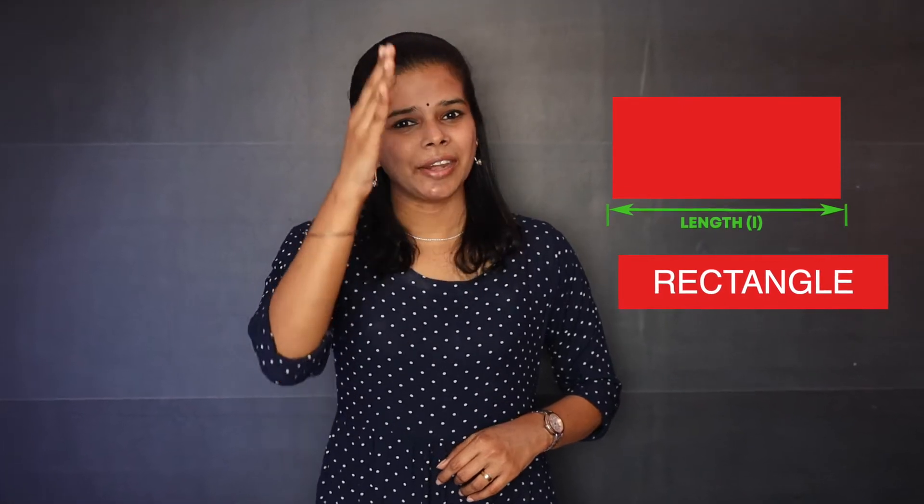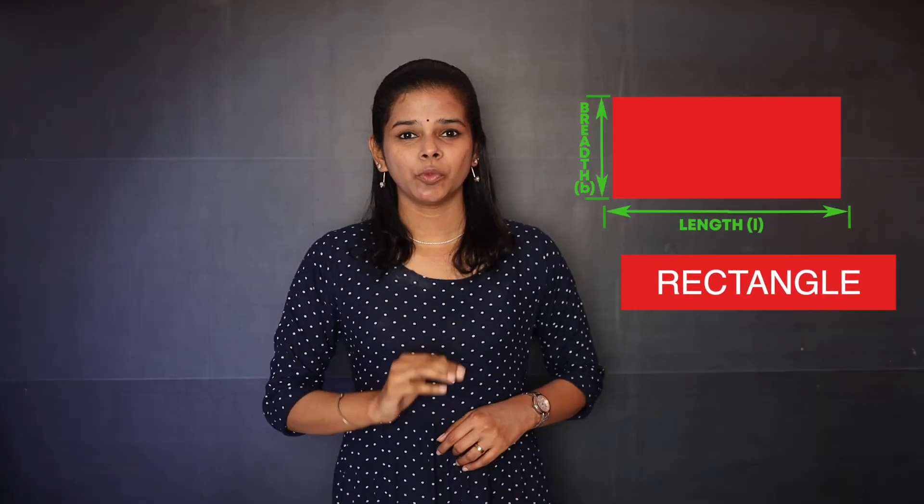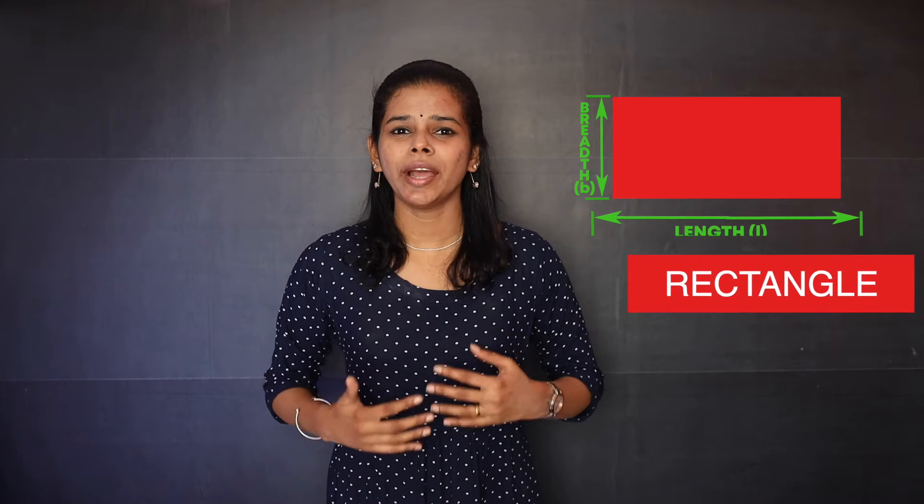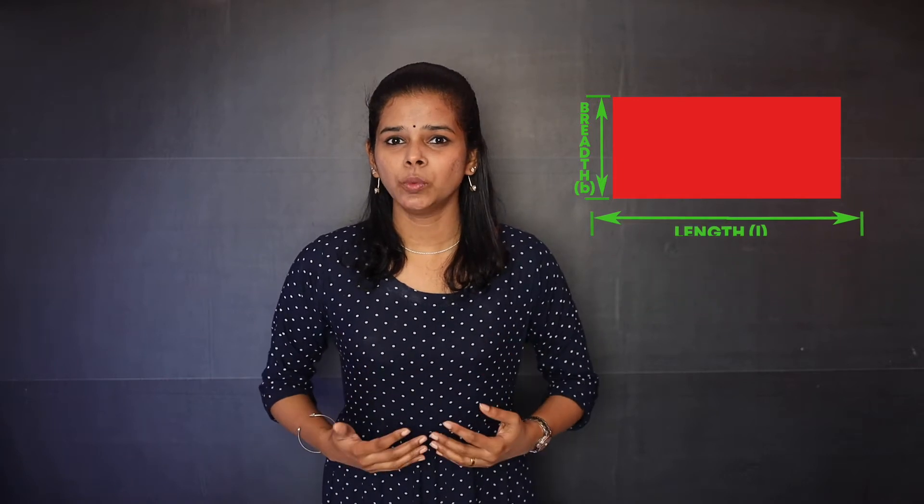Now look at this: it is a rectangle. How many dimensions are there? You can see a length and a breadth, so there are two dimensions. It is called a two-dimensional object or 2D shape. 2D shapes are shapes that we can draw on a flat surface like a paper. Now let us move on to solid shapes.